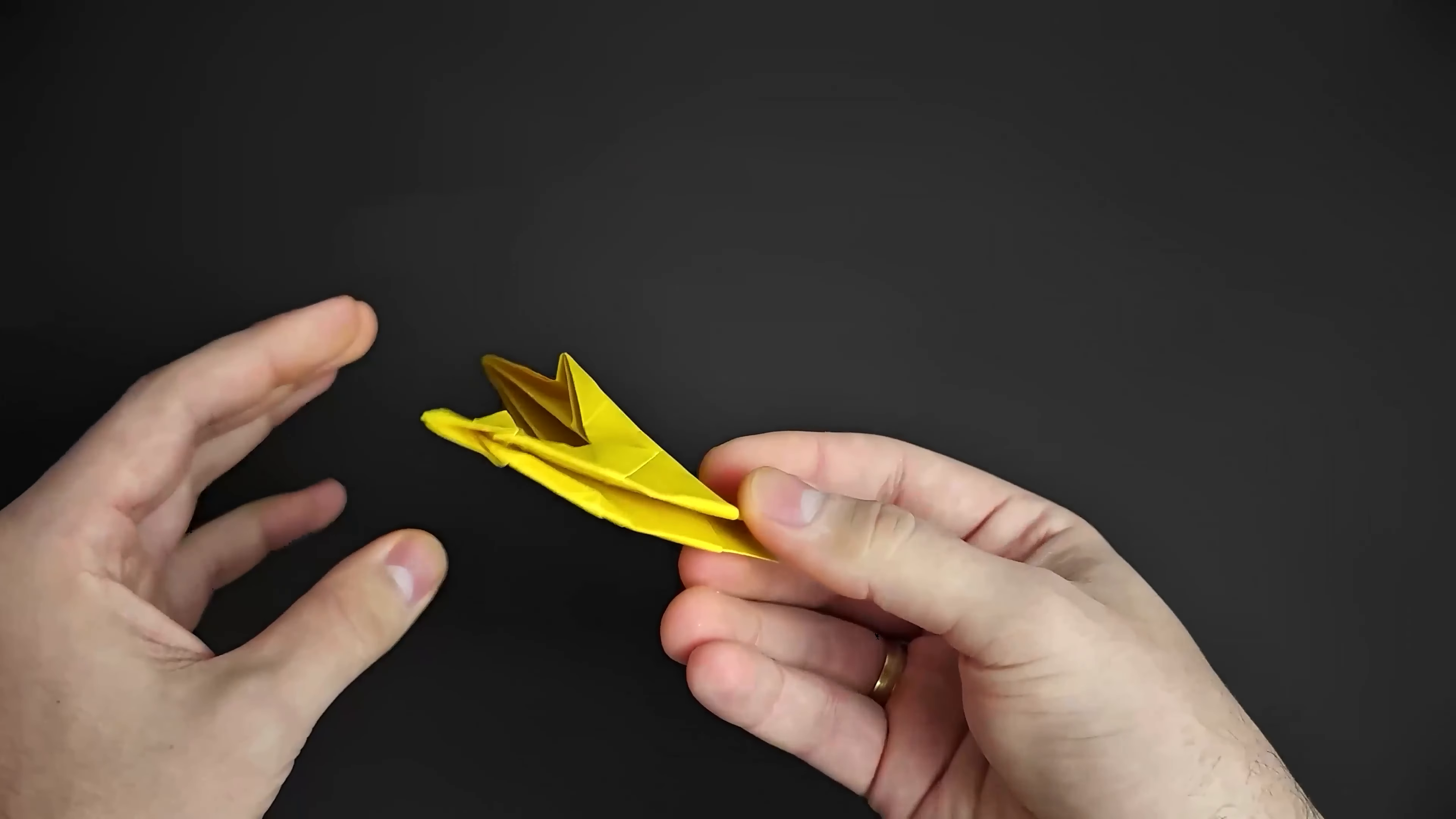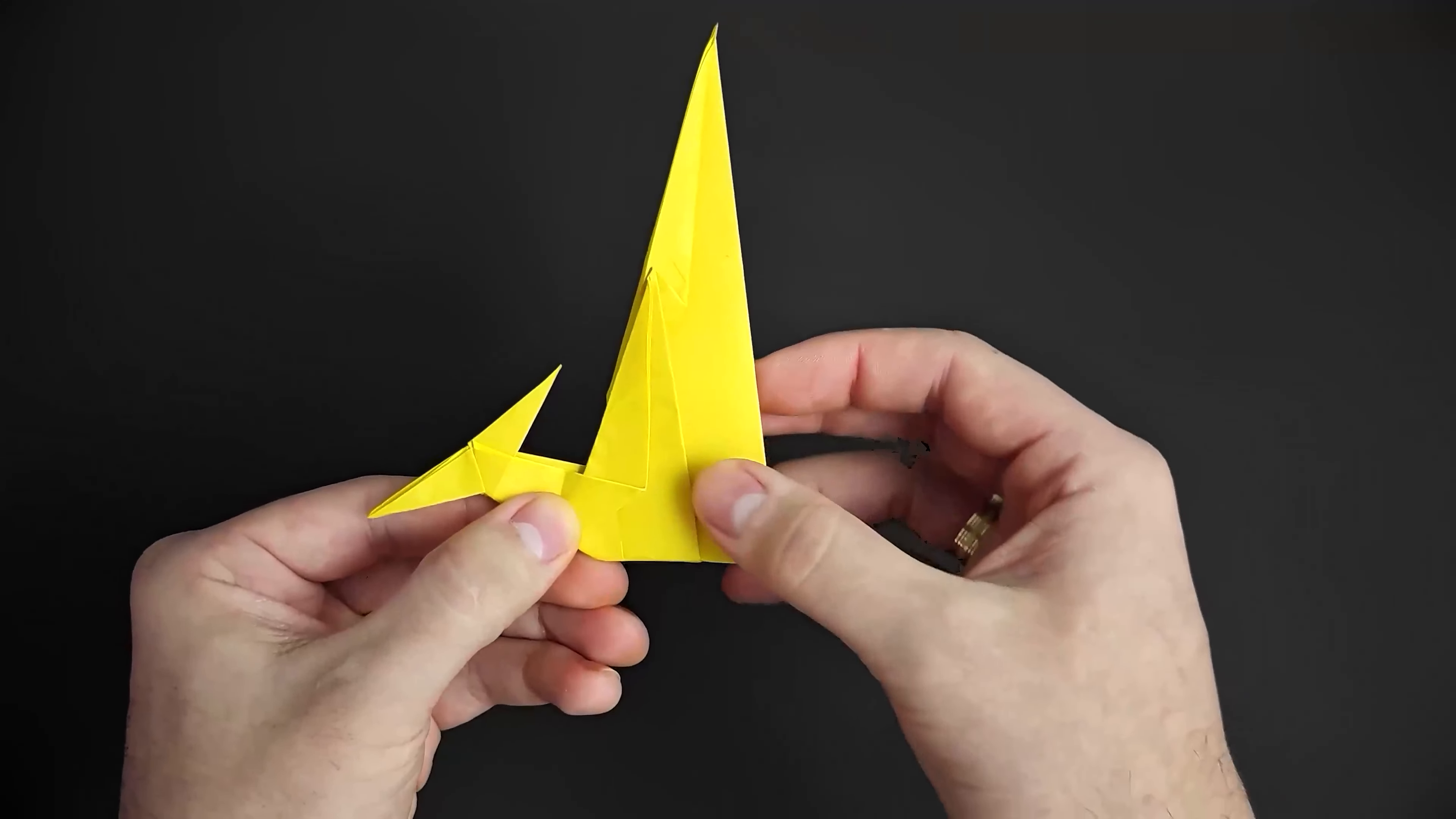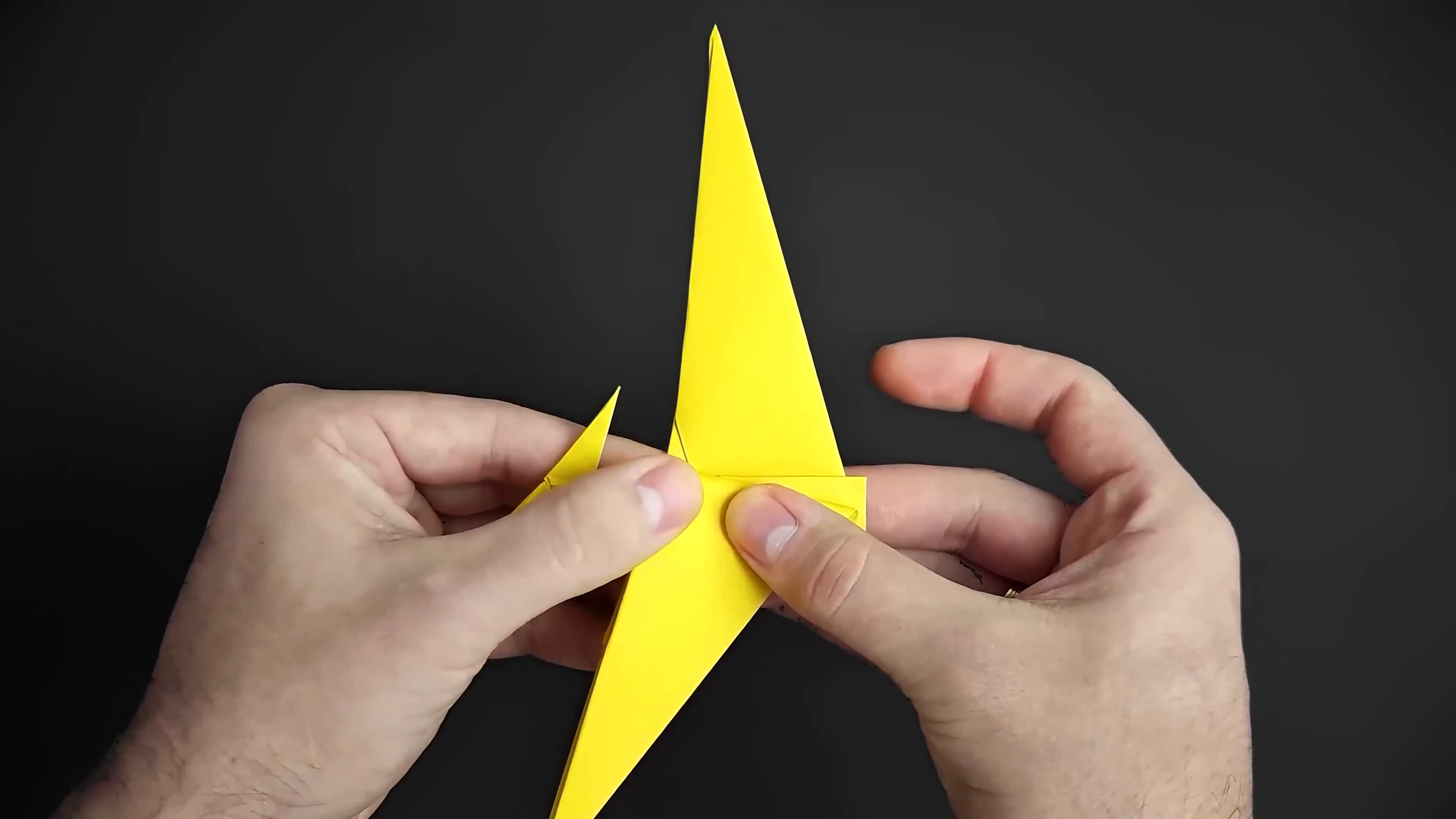We now have the head and the neck. To finish, we just need to fold the wings. You can fold them straight if you want, but I prefer to make an angle.